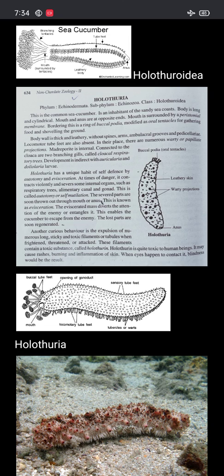The mouth is surrounded by a peristomal membrane. Bordering this is a ring of buccal podia modified as oral tentacles for gathering food and shoveling the ground. The body wall is thick and leathery, without spines, arms, ambulacral grooves, or pedicellaria. Locomotor tube feet are also absent; in their place there are numerous papillary projections.